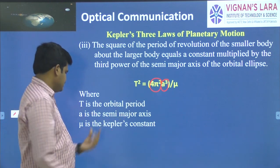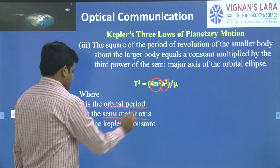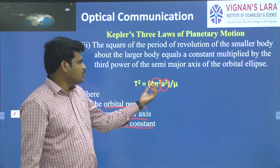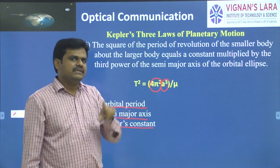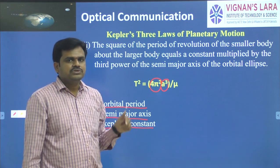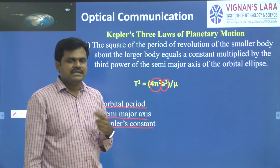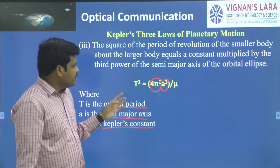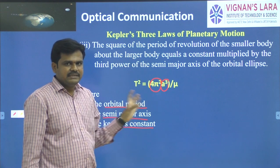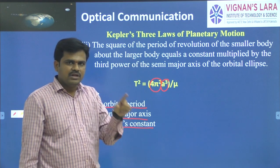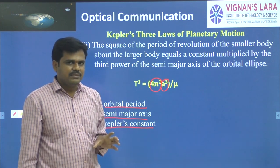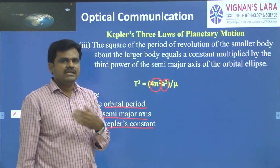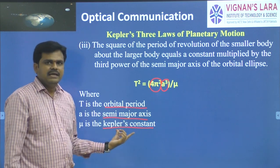Here, small 'a' means semi-major axis, capital T is orbital period, and μ is Kepler's constant. In the previous lecture we wrote T = 2π r^(3/2), where r is the distance from the satellite to the centre of the earth, assuming a circular orbit. But actually, Kepler's first law states the orbit is elliptical, so we replace r with 'a', the semi-major axis of the elliptical orbit.